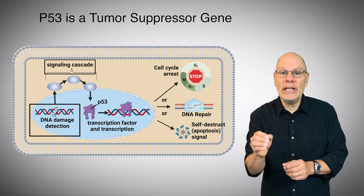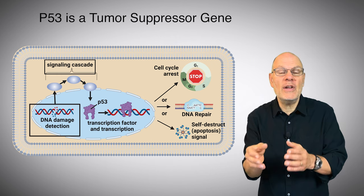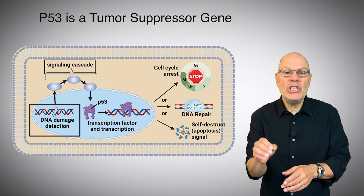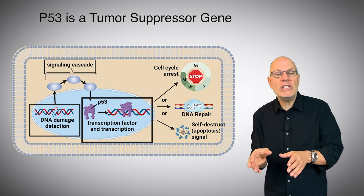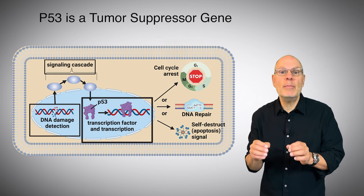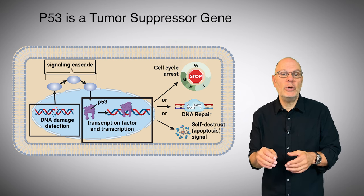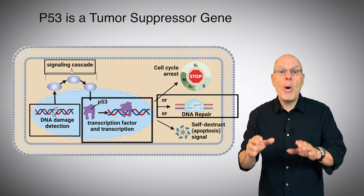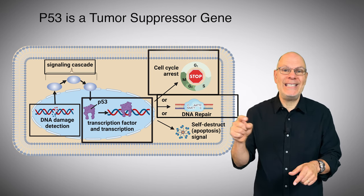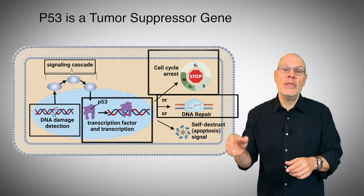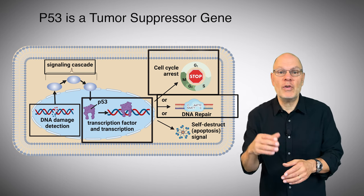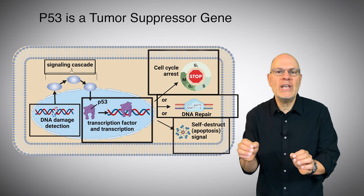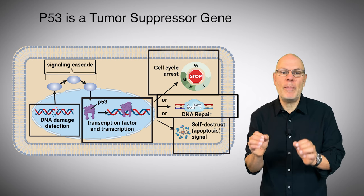Through various mechanisms, a cell can detect DNA damage, and that initiates a signaling cascade, which results in the activation of the P53 protein. P53, once activated, initiates transcription of other genes. The proteins produced can have a variety of effects: activating DNA repair proteins in response to DNA damage, pausing the cell cycle at the G1 checkpoint so that DNA repair has time to occur — preventing cells with mutations from reproducing — and finally, initiating apoptosis, that's programmed cell death, when the cell's DNA damage can't be repaired.